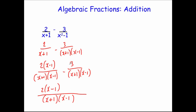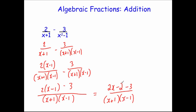The second fraction already has that denominator, so I leave it as 3 over (x + 1)(x − 1). Putting it all over the same denominator, the top line is 2(x − 1) minus 3. Expanding: 2 times x is 2x, 2 times −1 is −2, subtract 3. So the numerator simplifies to 2x minus 5, and the answer is (2x − 5) over (x + 1)(x − 1). That's how you deal with adding and subtracting algebraic fractions — just make sure they've got the same common denominator, and then work it out.